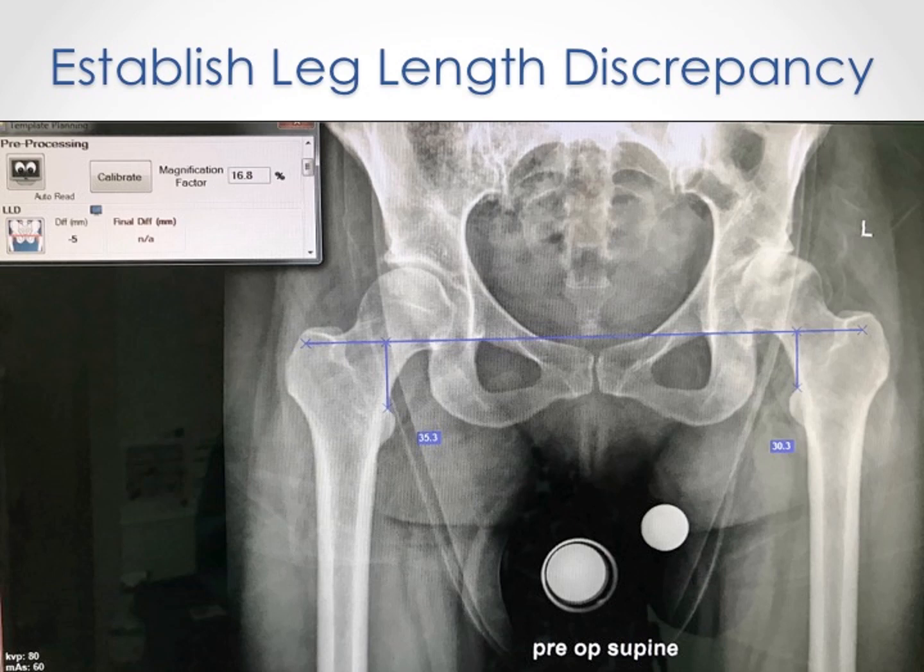Once the preoperative radiograph is accepted, we determine the leg length discrepancy. A line between the teardrops — the teardrop line — is drawn across the pelvis. Then the top of the lesser trochanter on each side is identified. The distance from this teardrop line to the top of the lesser trochanter is computed and compared. For this patient, the measurement on the right leg is 35.3mm and the left leg is 30.3mm. Therefore, the operative leg is 5mm shorter than the non-operative leg.